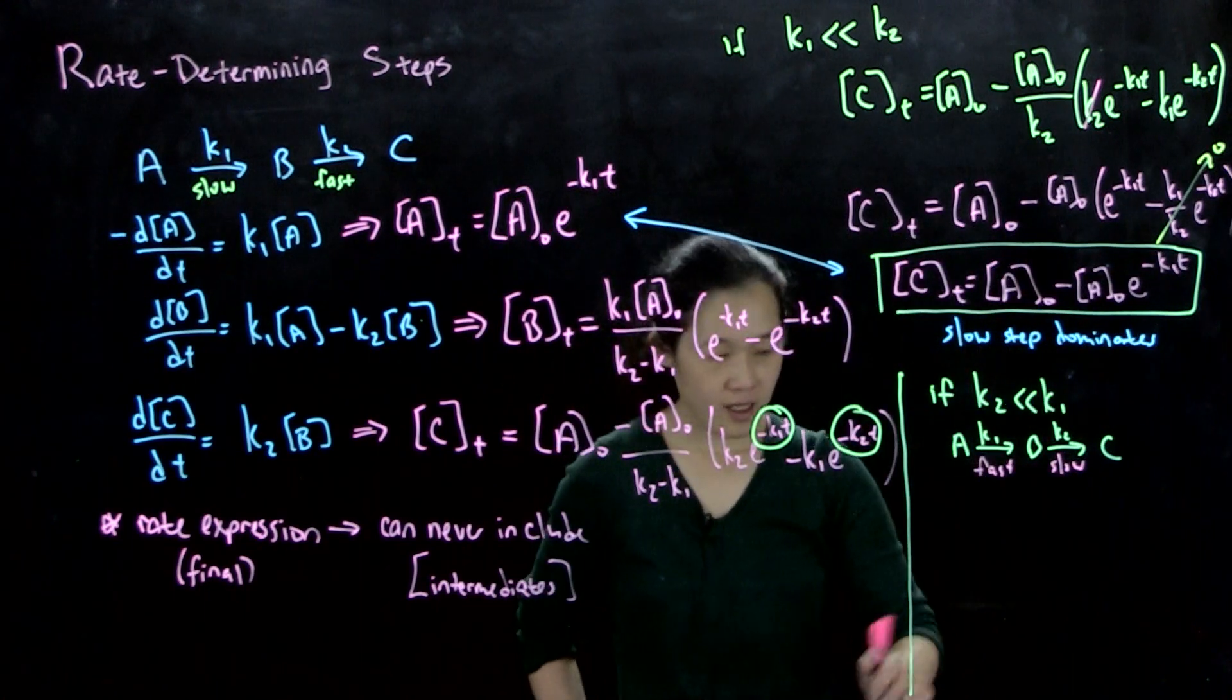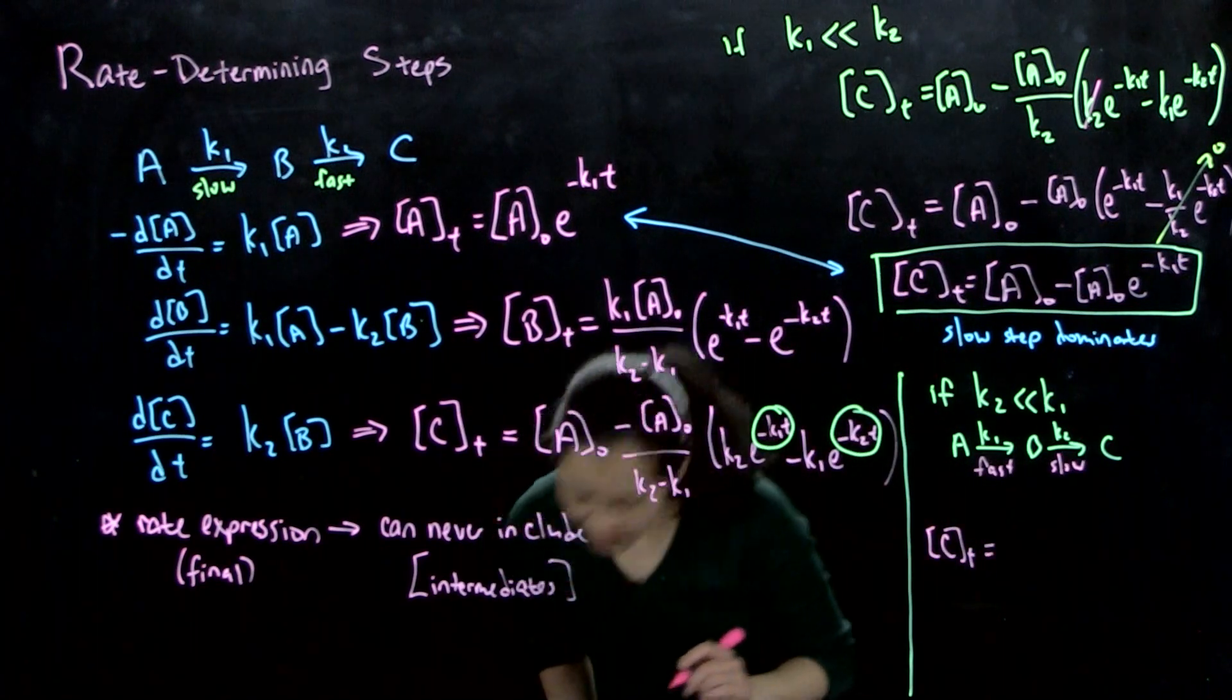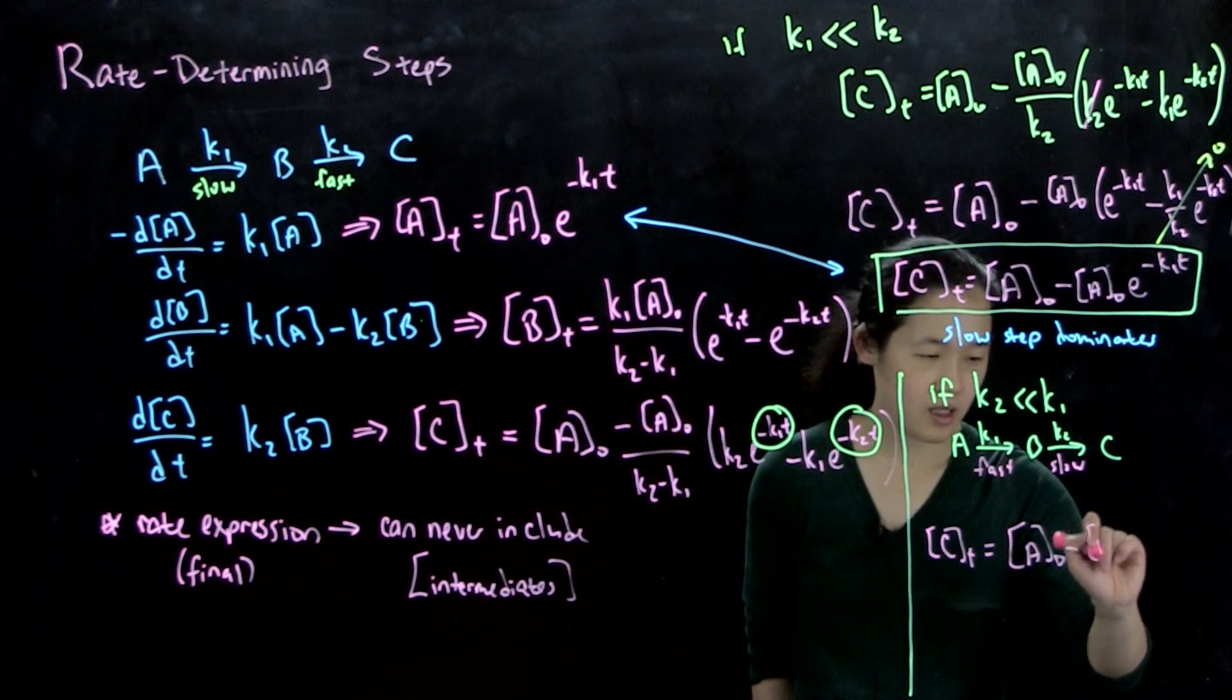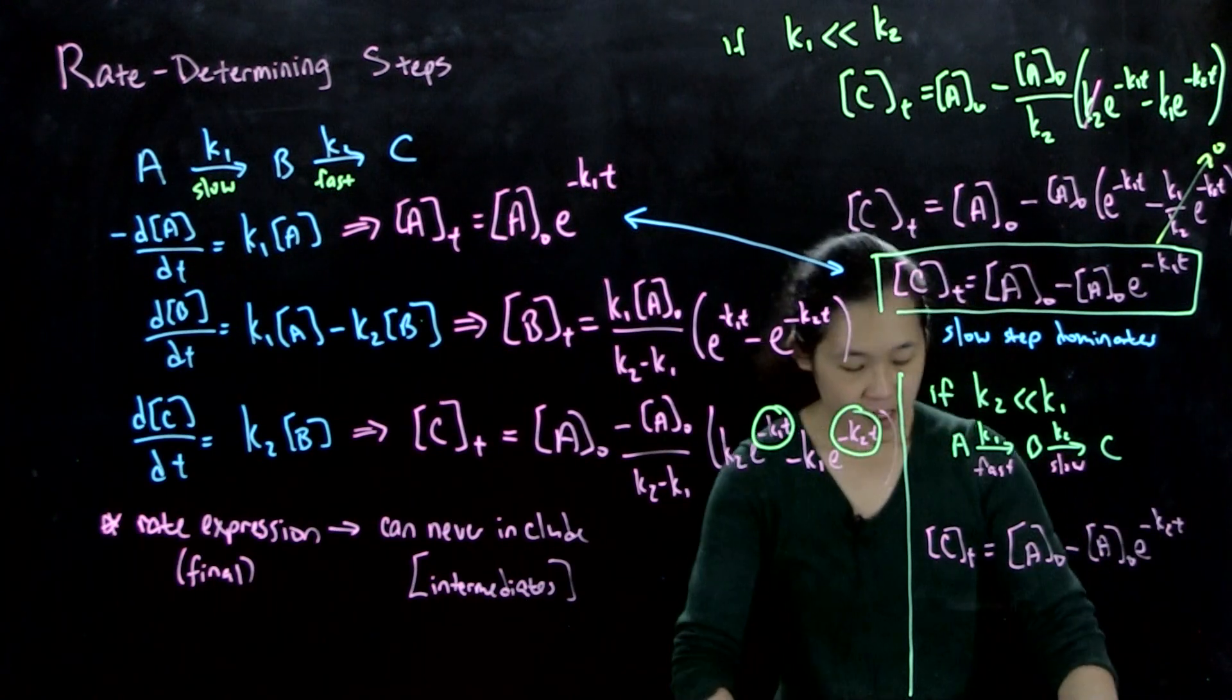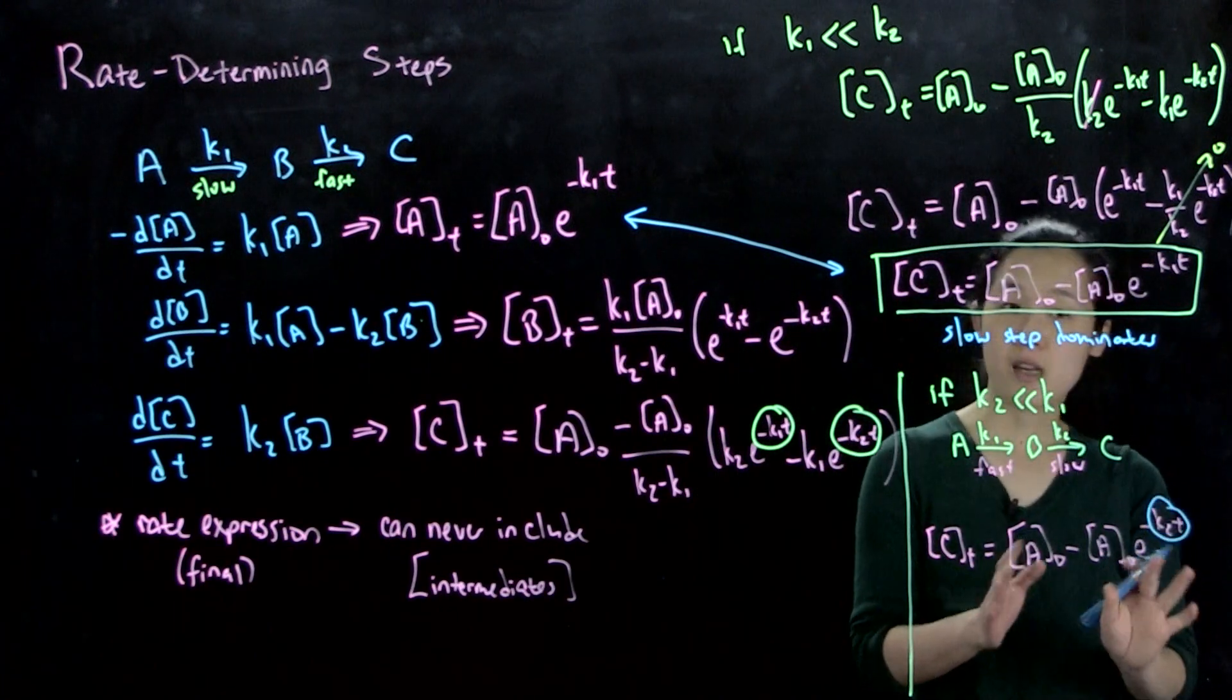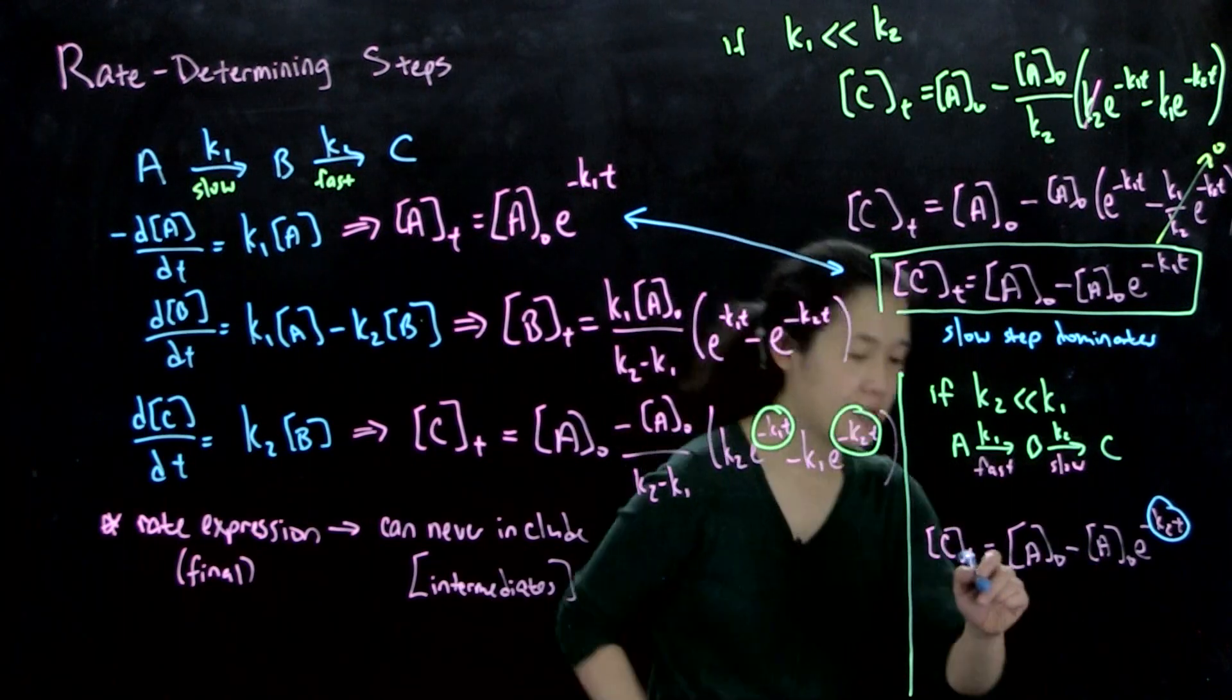What you get out is that C over time equals A0(1 - e^(-k2t)). So now you can see that our rate law is dependent only on k2t, again in a first order reaction. But now we still have our A0s at the beginning. So again, slow step dominates.